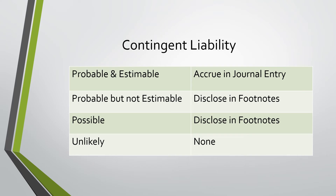Contingent liabilities: if the liability is probable and estimable, we would accrue it in a journal entry. If it is probable but not estimable, we would disclose it in the footnotes. If it is just possible, we would again only disclose it in the footnotes. And if it is unlikely that the liability will occur, we do neither.